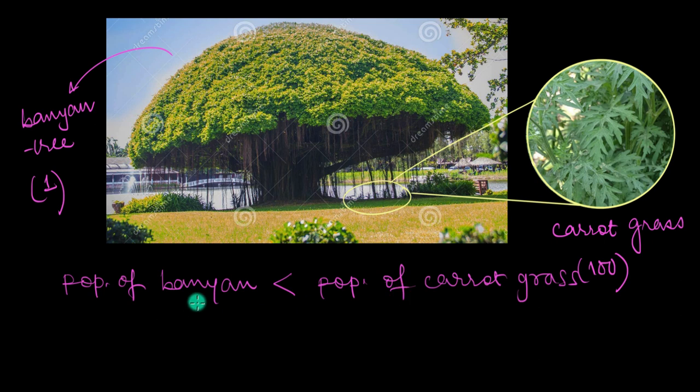Now just because the number of banyan trees is very less compared to the number of the carrot grass plants, we cannot overlook the kind of impact that this huge banyan tree has on the ecosystem there compared to these grass plants. I mean these grass plants are pretty tiny compared to this huge tree, right? So in this case, a more practical measure would be the biomass of the plants, which is the mass that is found in living organisms. So instead of measuring the number of trees or plants, we measure their biomass per unit area.